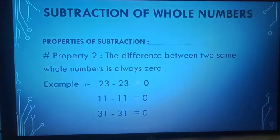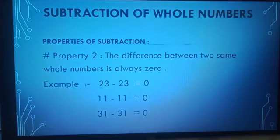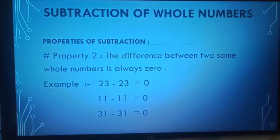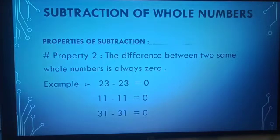Moving towards the next property: the difference between two same whole numbers is always 0. For example, 23 minus 23 is equal to 0. In the next example, 11 minus 11 is equal to 0. And 31 minus 31 is equal to 0.